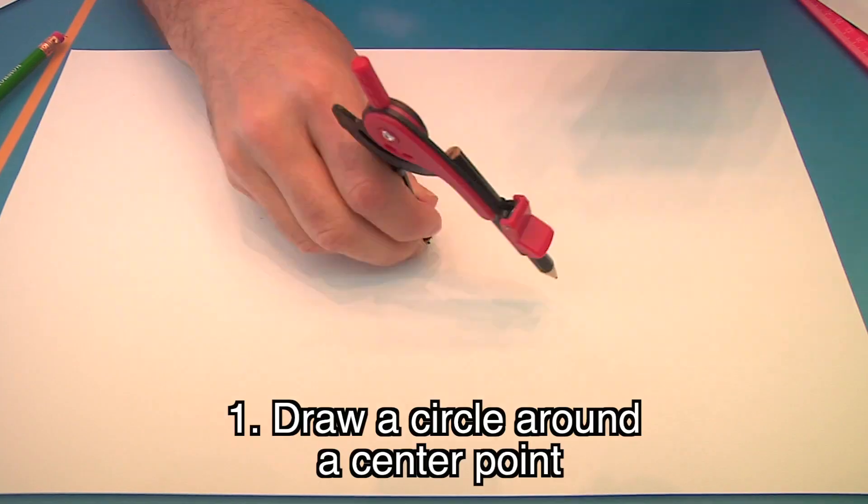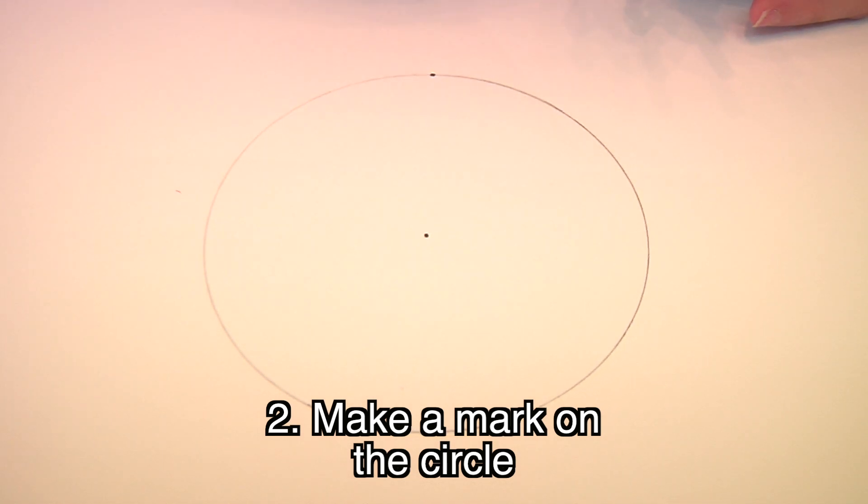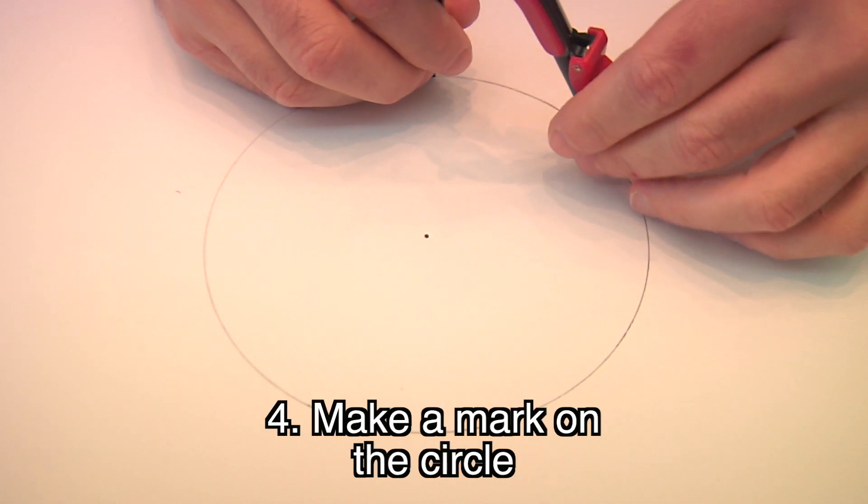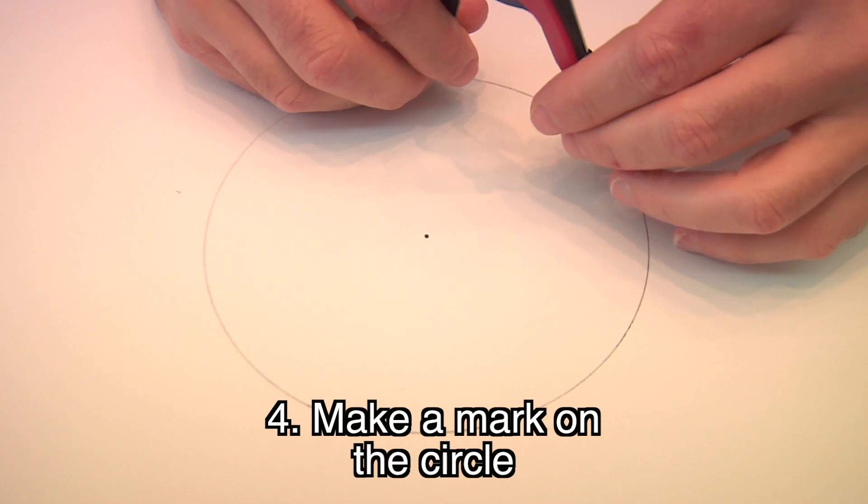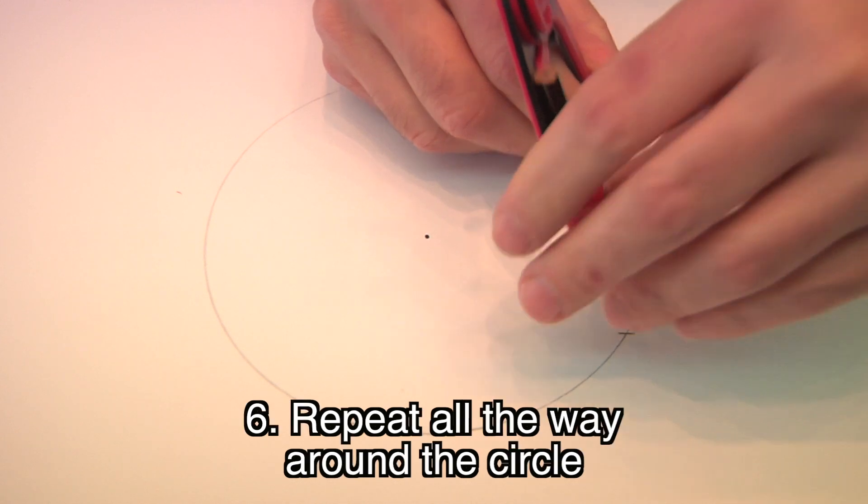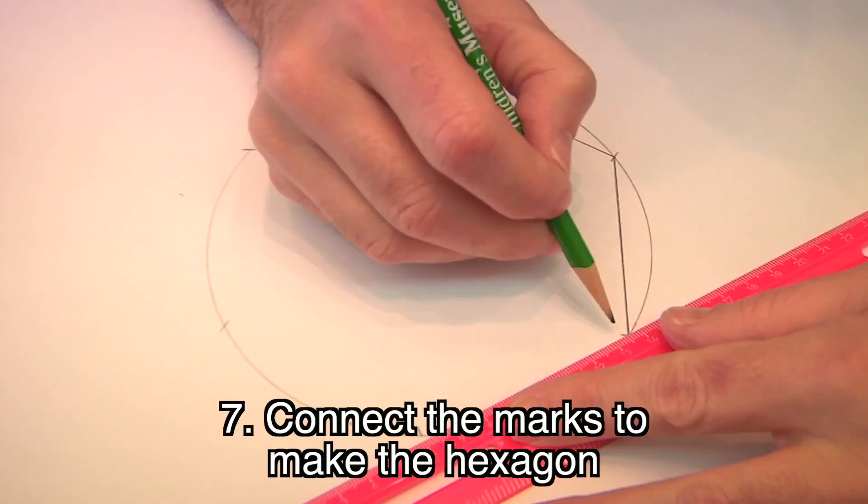Now let's try a different but related shape, a regular hexagon, a figure with six equal sized sides. Draw a circle around a center point. Make a mark anywhere on the outside of the circle. Keeping the compass the same distance that it was to start with, place the steady leg on the mark. Now make a mark where the compass meets the circle. Move the steady leg to the new mark and make another mark. Now repeat that all the way around the circle. Finally, connect the marks to make your hexagon.